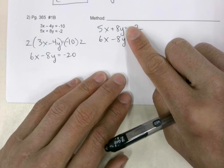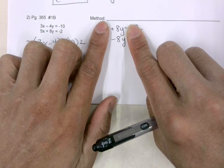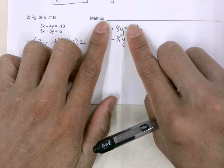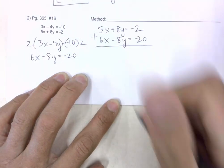Now you can see that we do have coefficients for the y variable that are opposites, and so we want to use addition. We put a line underneath and do an addition.